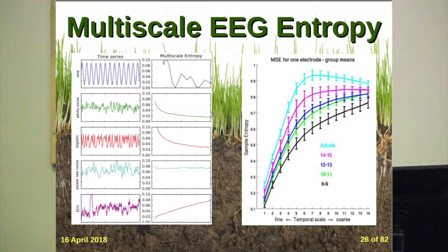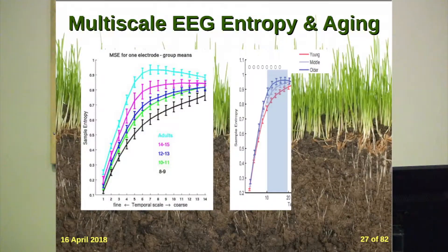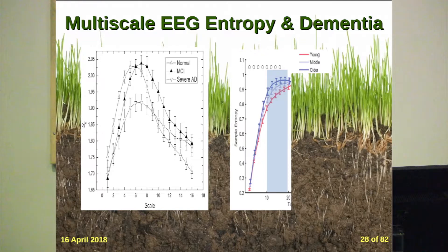When we look at multi-scale EEG entropy across the lifespan — from eight-year-olds all the way up to adults — entropy gets higher and higher across age. As our brain goes from infancy to a walking, talking, functional human, it becomes more complex and contains more information. This trend of increasing entropy continues into adulthood — from young, middle, to older adulthood — so brain entropy increases as we age. But dementia leads to a reduction in brain entropy. We have a real developmental progression and gain in entropy that gets lost in dementia but not in healthy aging.